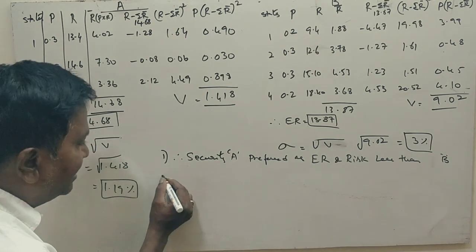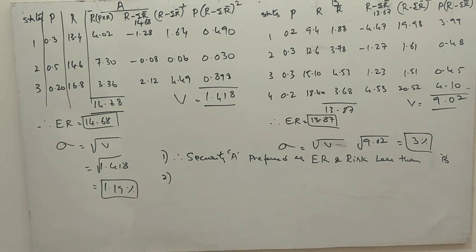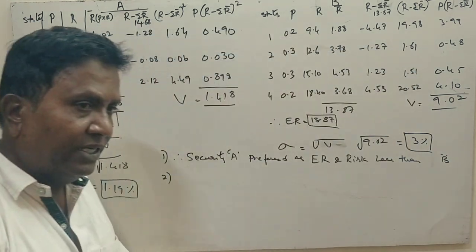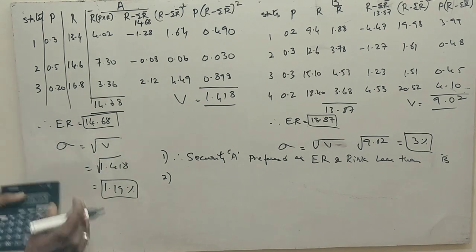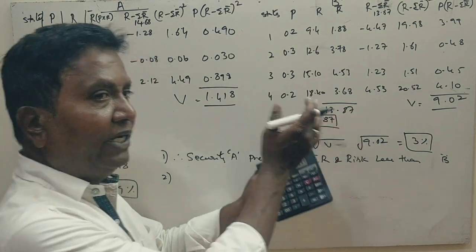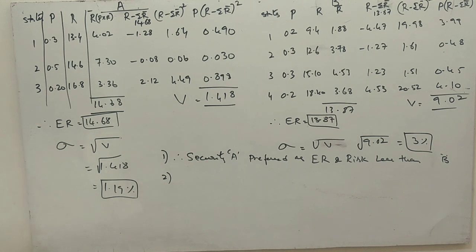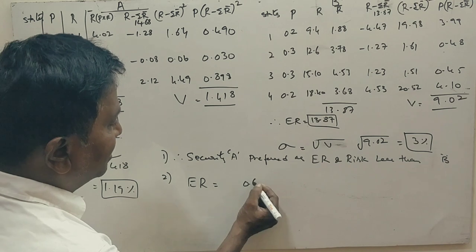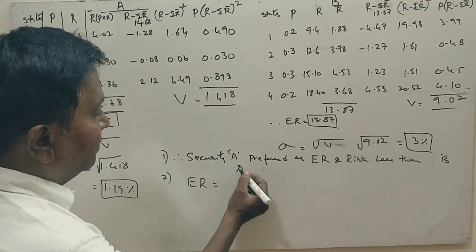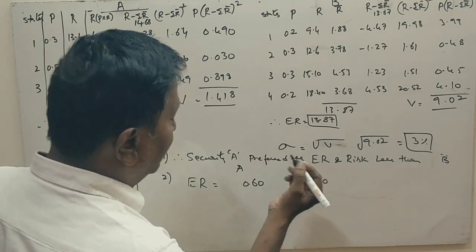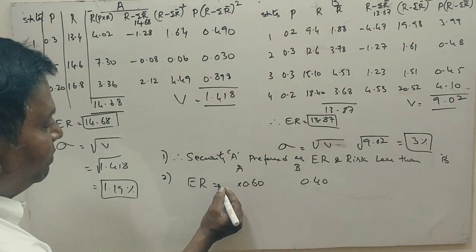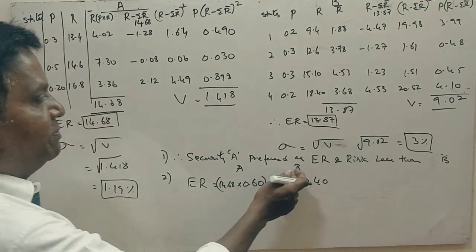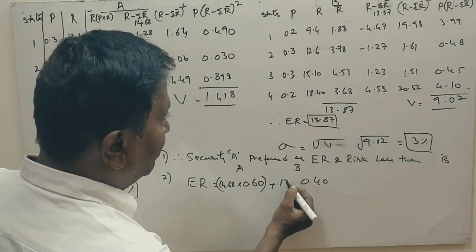Now, let's answer the second question. If this person wants to invest 60% of his money in Security A and 40% in Security B, what is the expected return? The expected return in A is 14.68, and the expected return in B is 13.87.